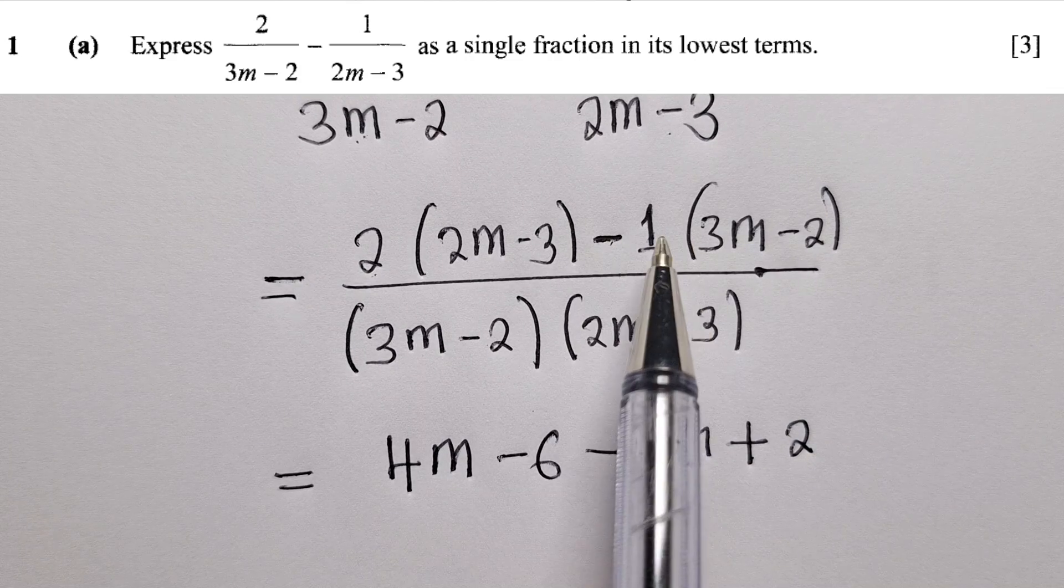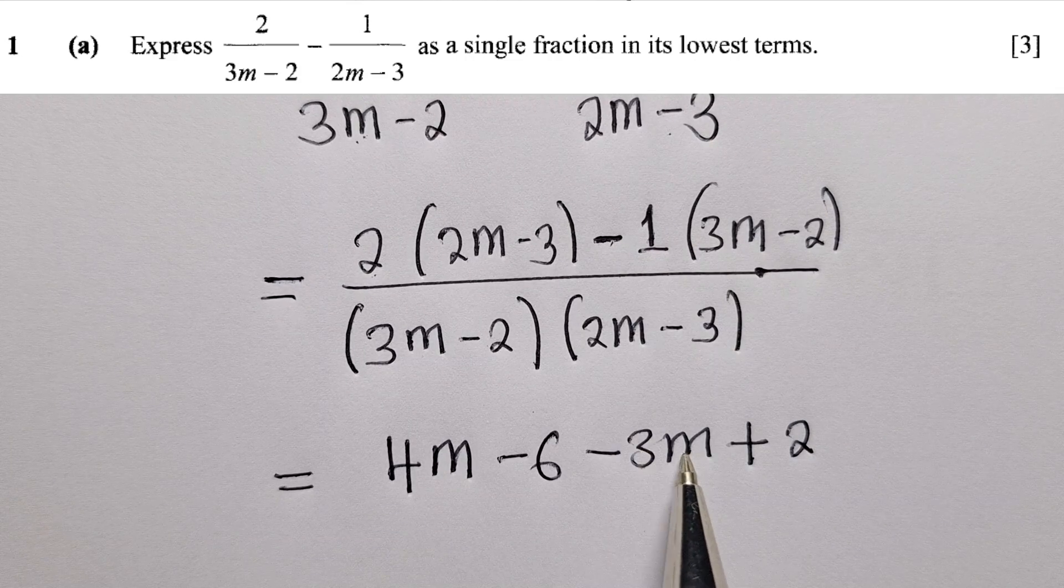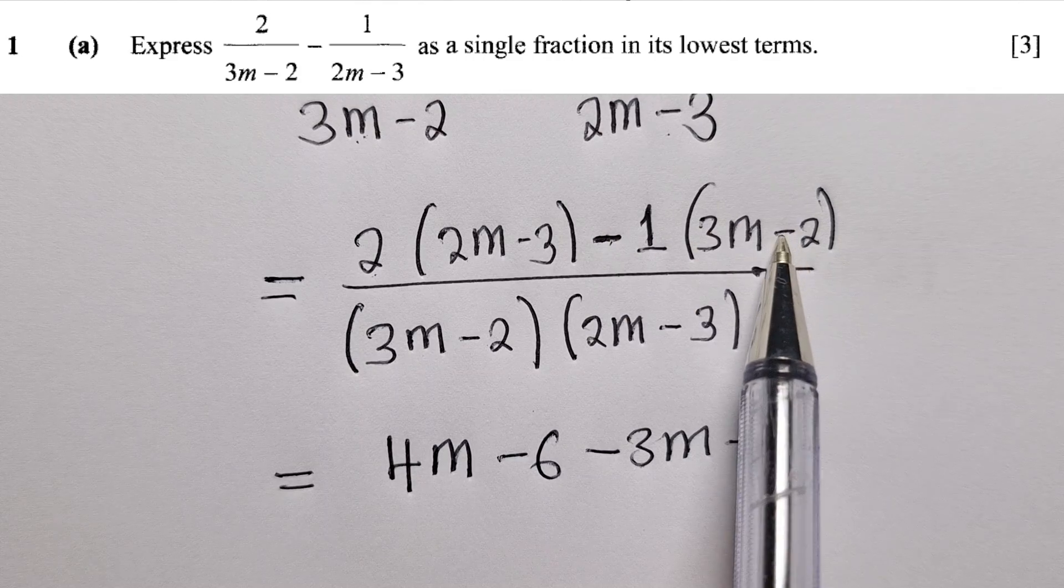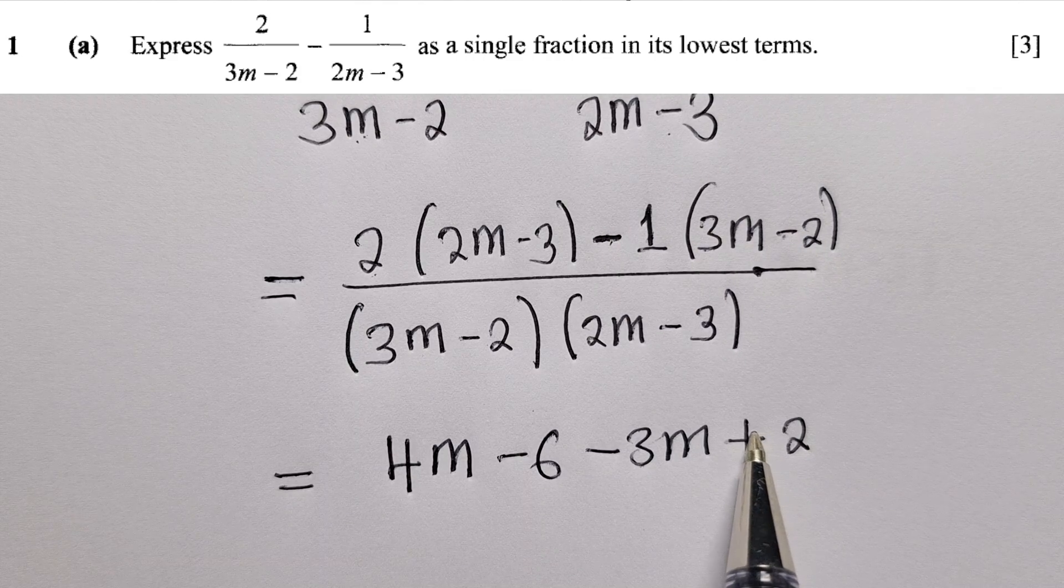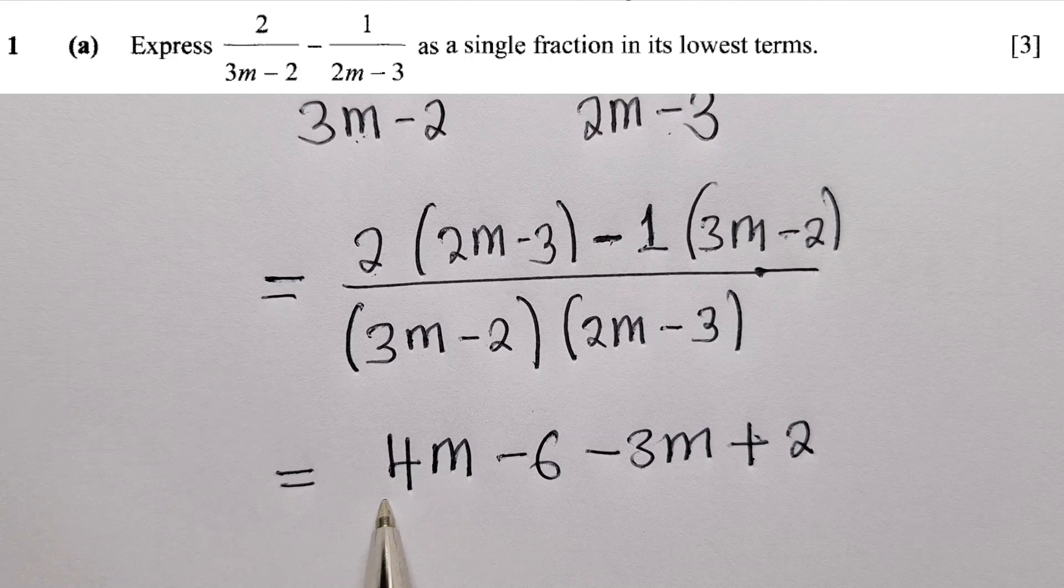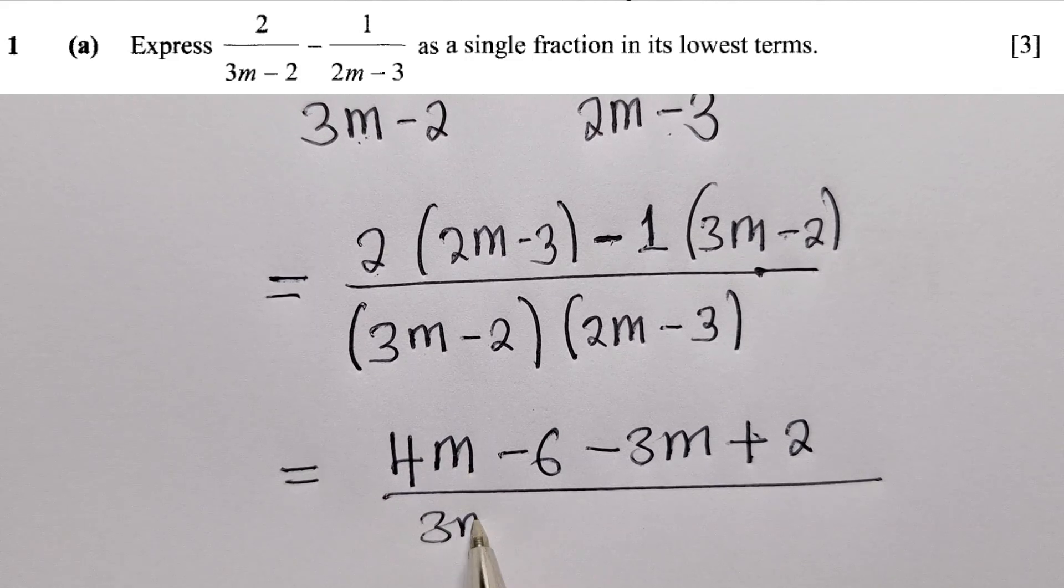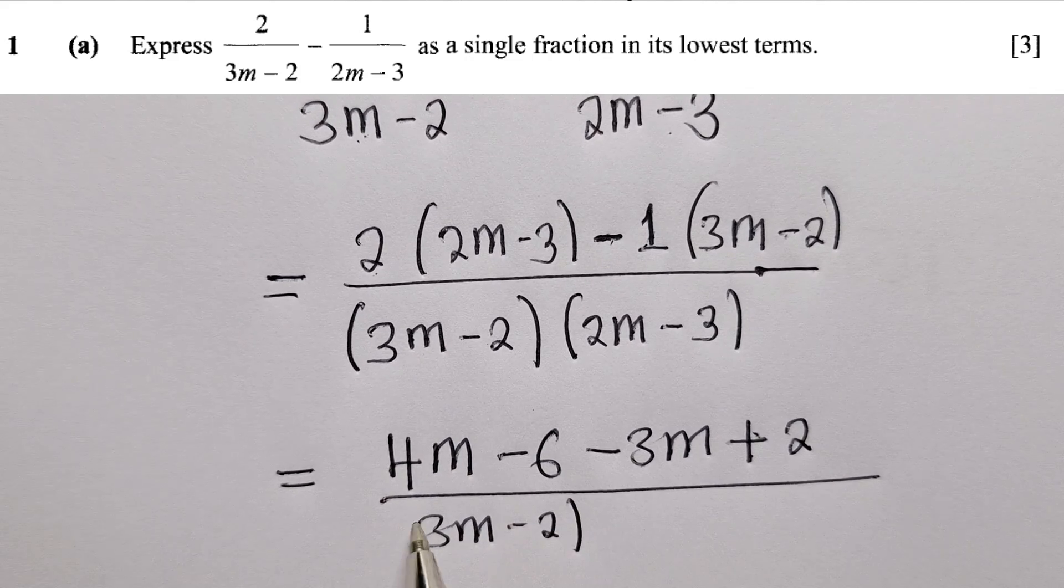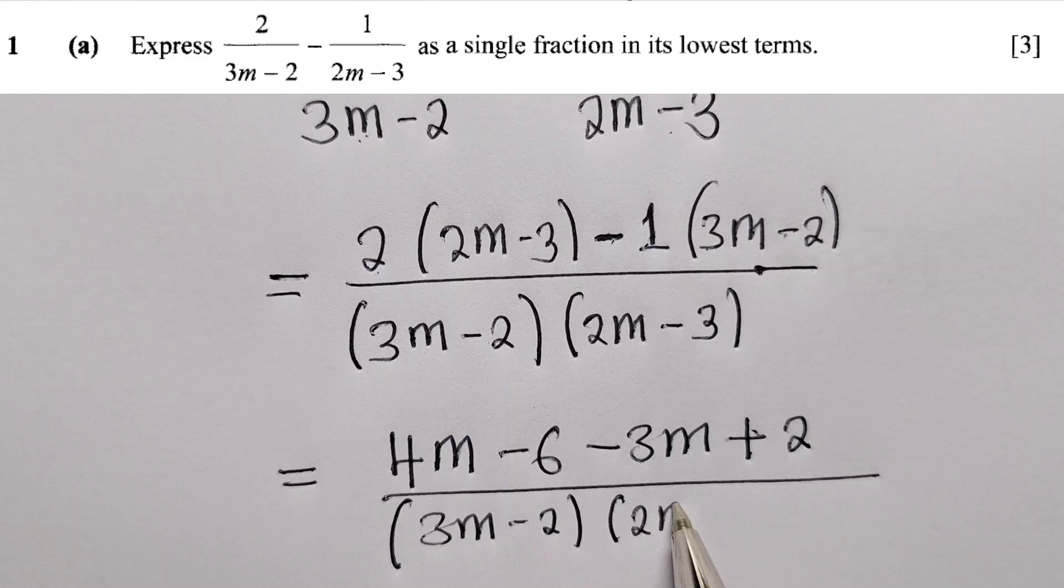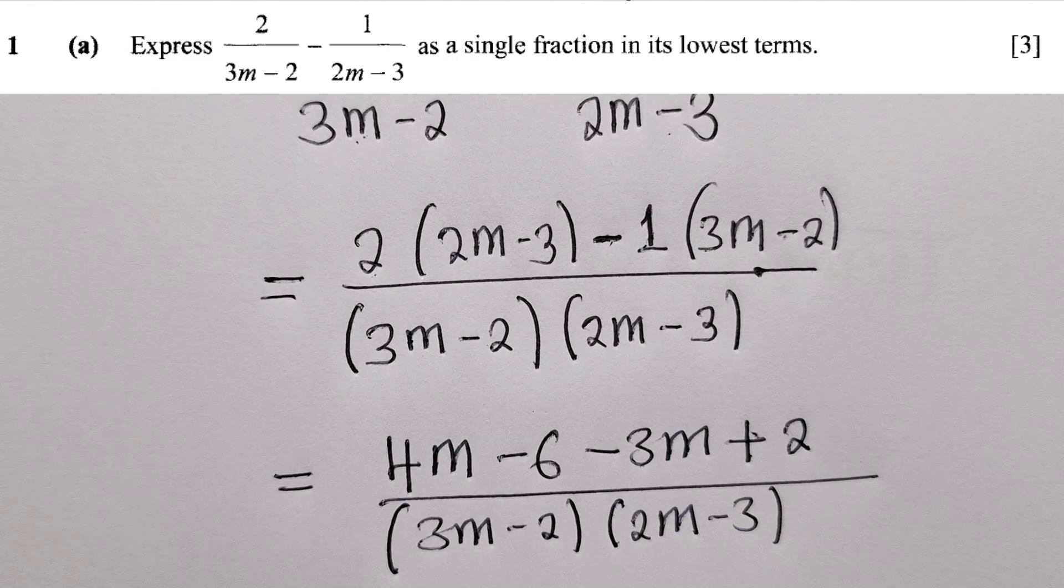The negative 1 times 3m is minus 3m. Negative times negative gives positive, so negative 1 times negative 2 is 2. We write this over (3m-2)(2m-3) - we just maintain this denominator.